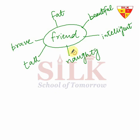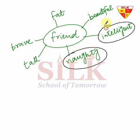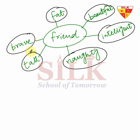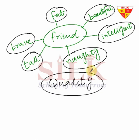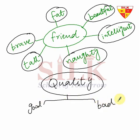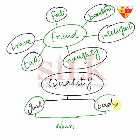Toh aapne apne friend ki kya kya qualities batayen: she is naughty, she is intelligent, she is beautiful, she is fat, wo brave bhi hai, and she is tall. So grade 4, yeh jo saari qualities hain, jin mein koi good quality bhi aap bata sakte hain aur koi bad quality bhi ho sakti hai. Kisi bhi noun ki good quality ya bad quality ko adjective bolte hain. Kya bolte hain? Yes, very good — adjective bolte hain.